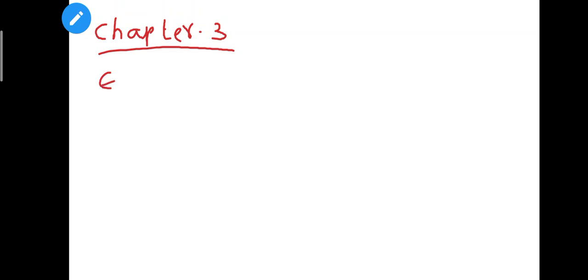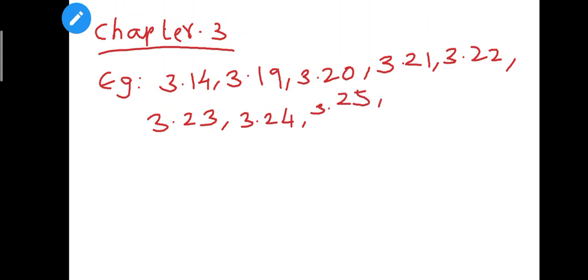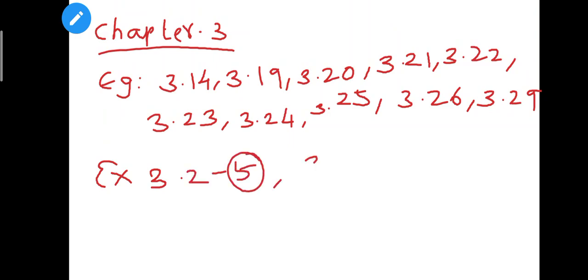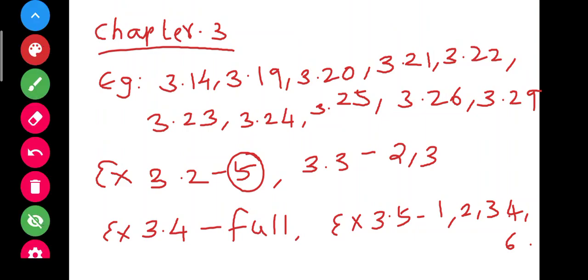So next, third chapter — that is Theory of Equations. So chapter 3, in this example, what exercise and how to do it. Examples: 3.14, 3.19, 3.20, 3.21, 3.22, 3.23, 3.24, 3.25, 3.26, 3.29. In the examples you can do it. Next exercise 3.2 — 5th sum you can do it. Next exercise 3.3 — 2.13. Next exercise 3.4 full reduce. So in the third lesson, take a screenshot.